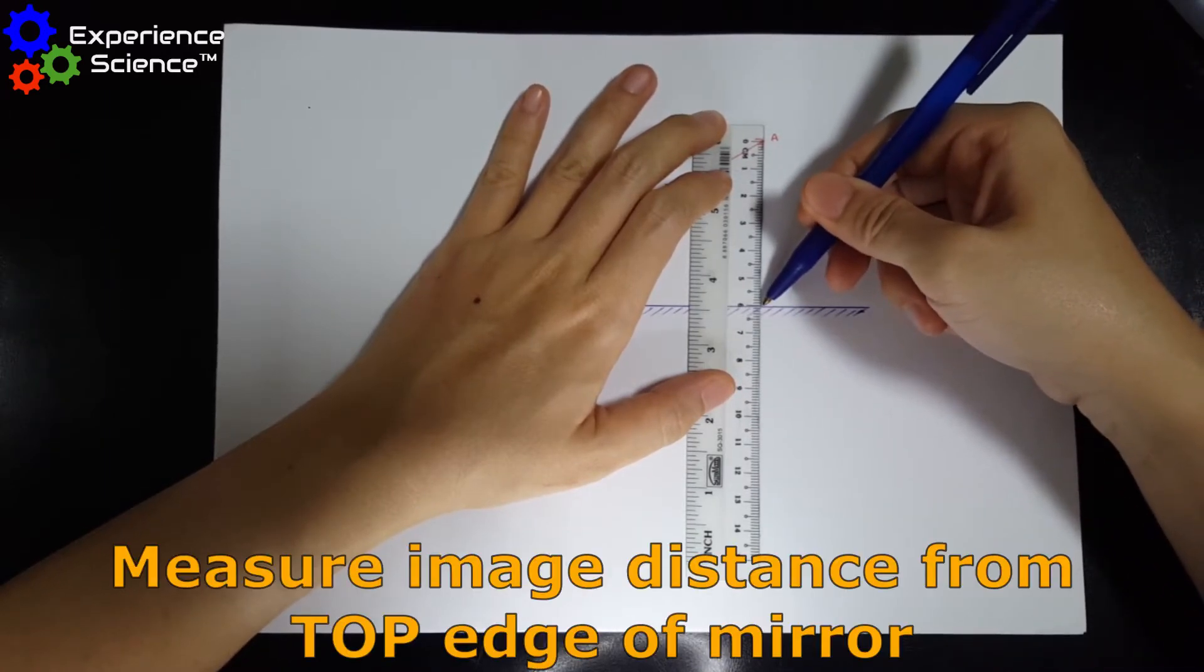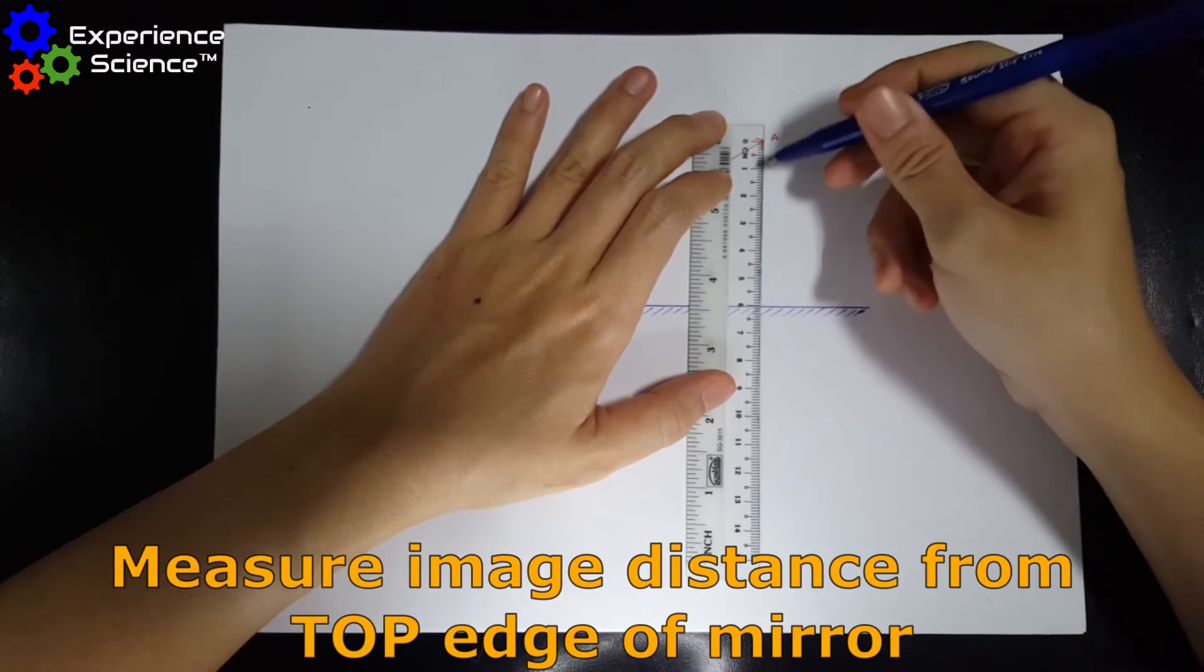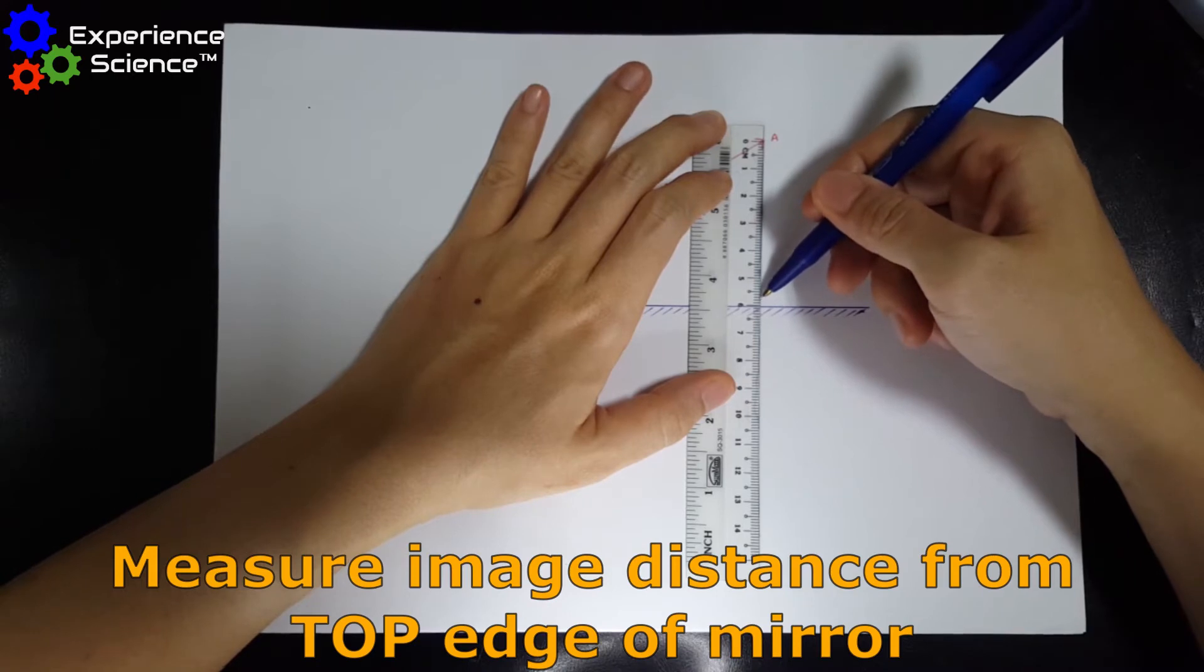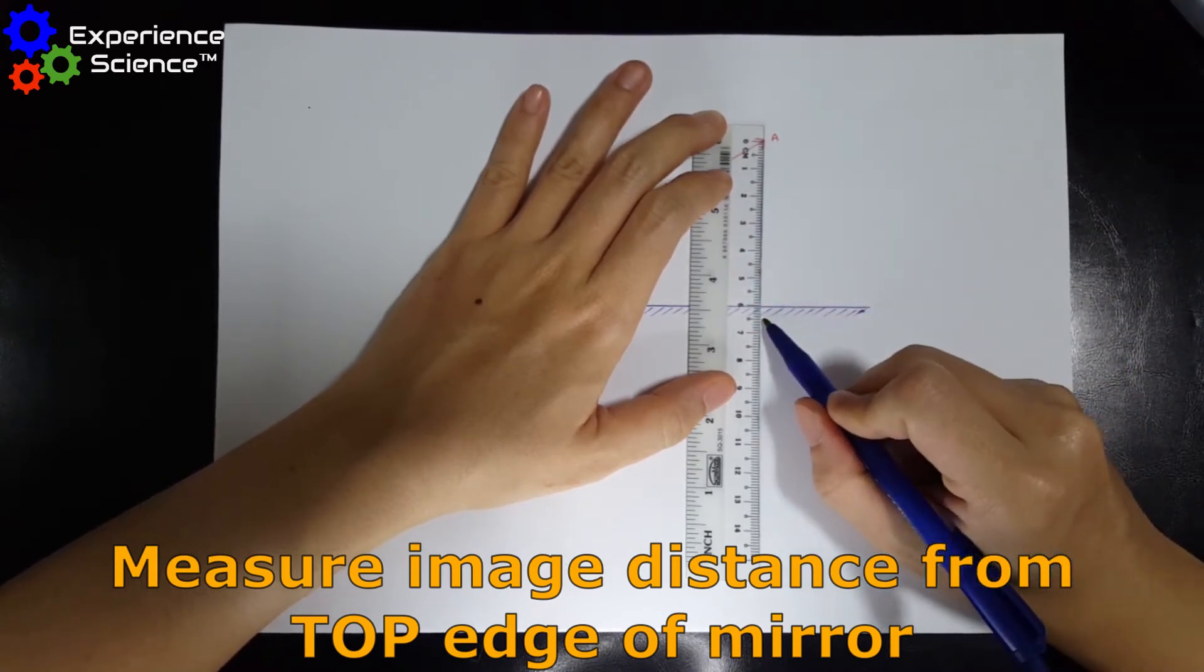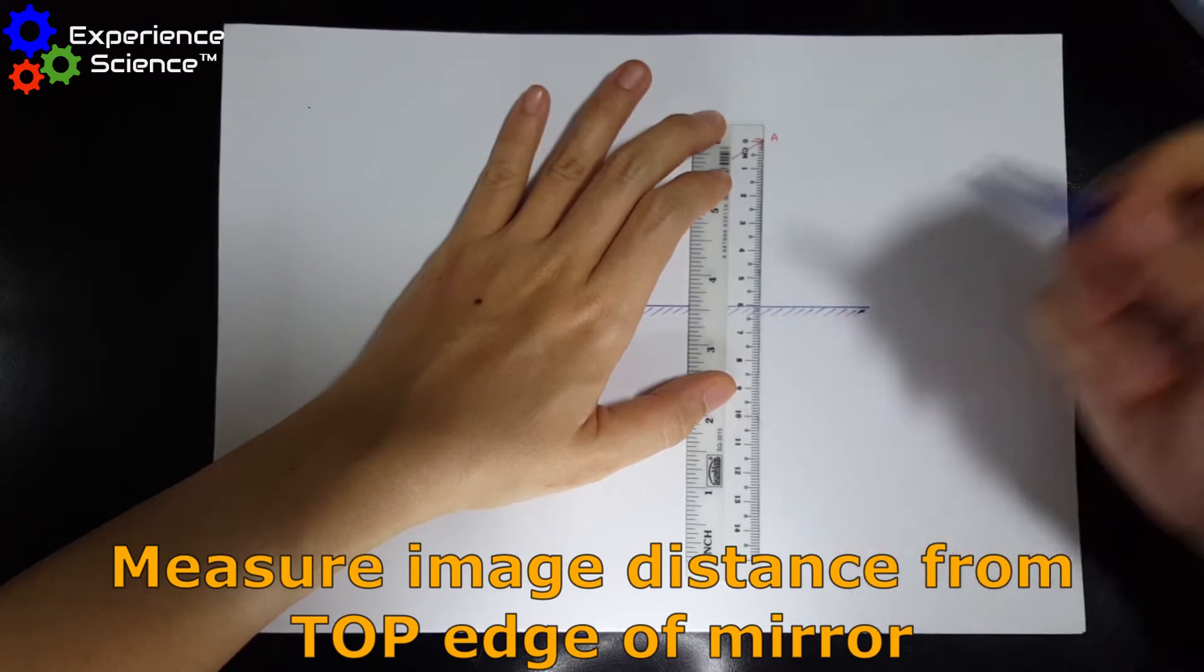Do take note that we measure 6 cm from the point at which the reflection hits the mirror. We do not measure 6 cm from the back of the shaded line or the back of the mirror.